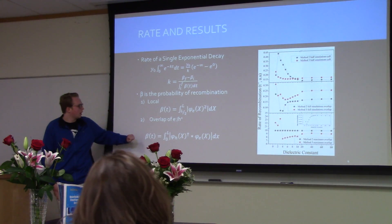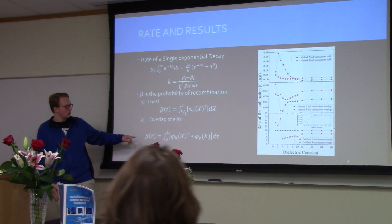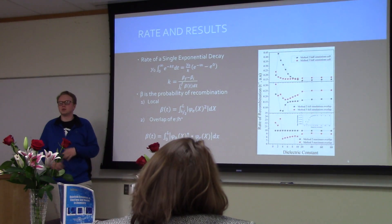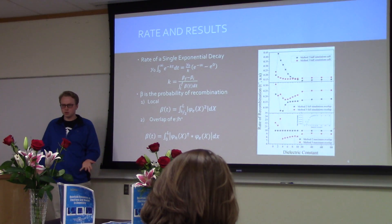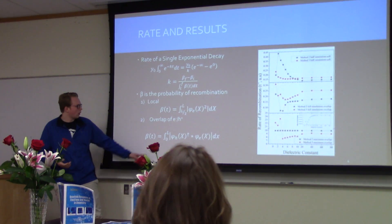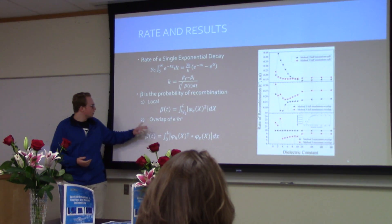I did it in two ways finding rates: I integrated like everyone else, but then I did the overlap of the two electron and hole. If the electron and hole are on top of each other, there's a probability for recombination.